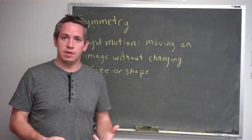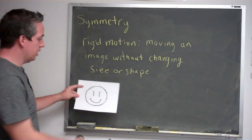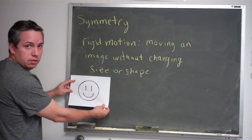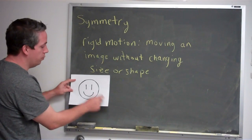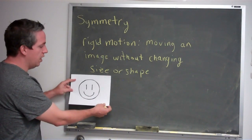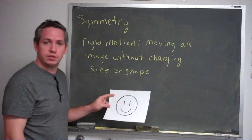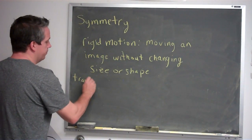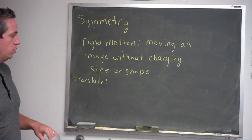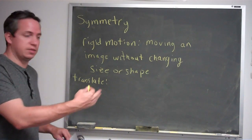There are four basic examples of rigid motion we're going to talk about today. The first: I could take an image and simply move it the same direction and the same distance — so all the points on this smiley face move the same direction and the same distance. This is what we call a translation. To translate means we're going to move everything in the image the same distance in the same direction.